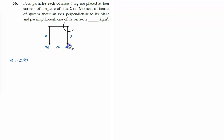And four particles, each of same mass, and mass of each particle is given to us, that is 1 kg. Moment of inertia of the system about an axis perpendicular to the plane and passing through one of its vertices.